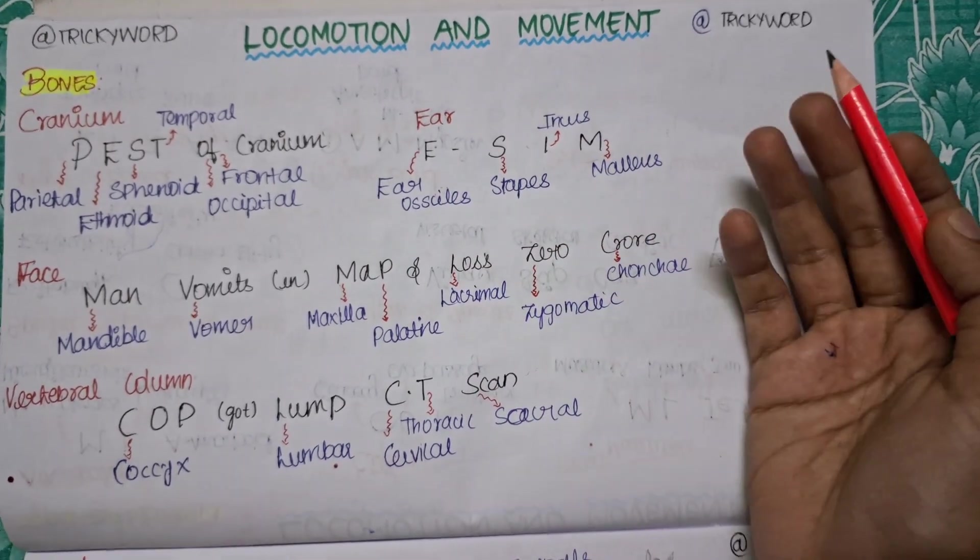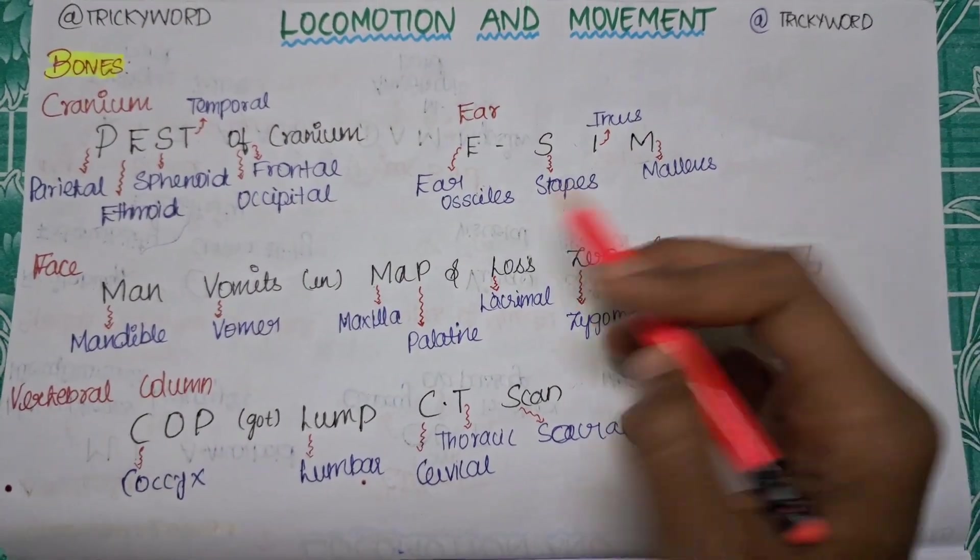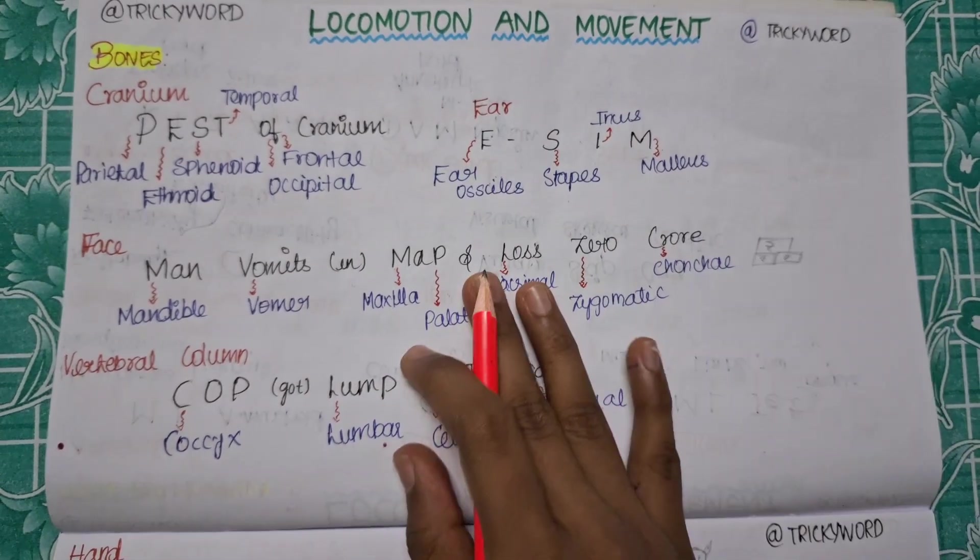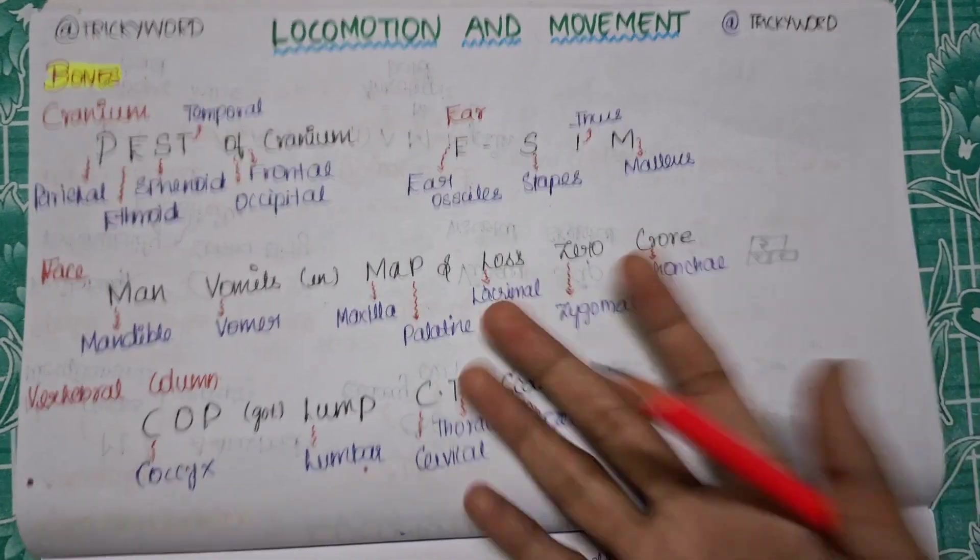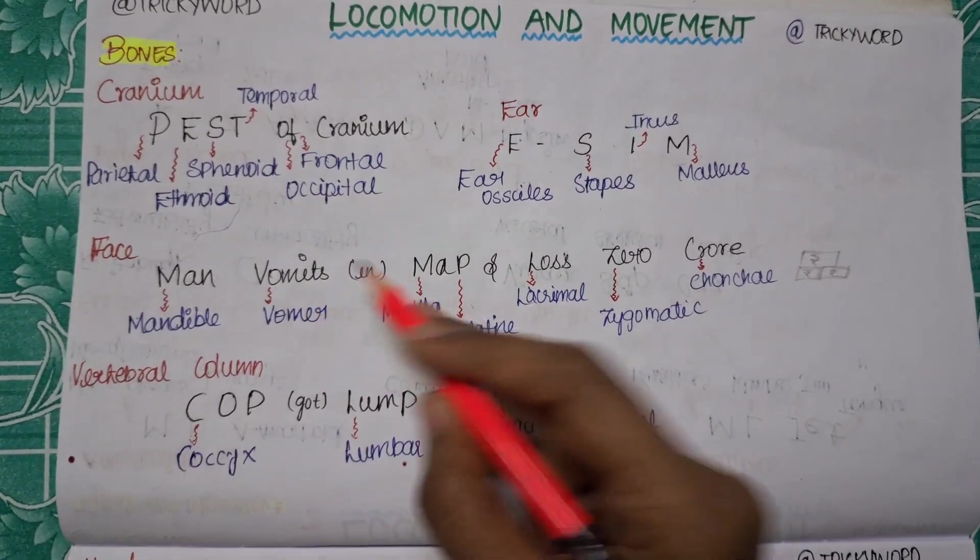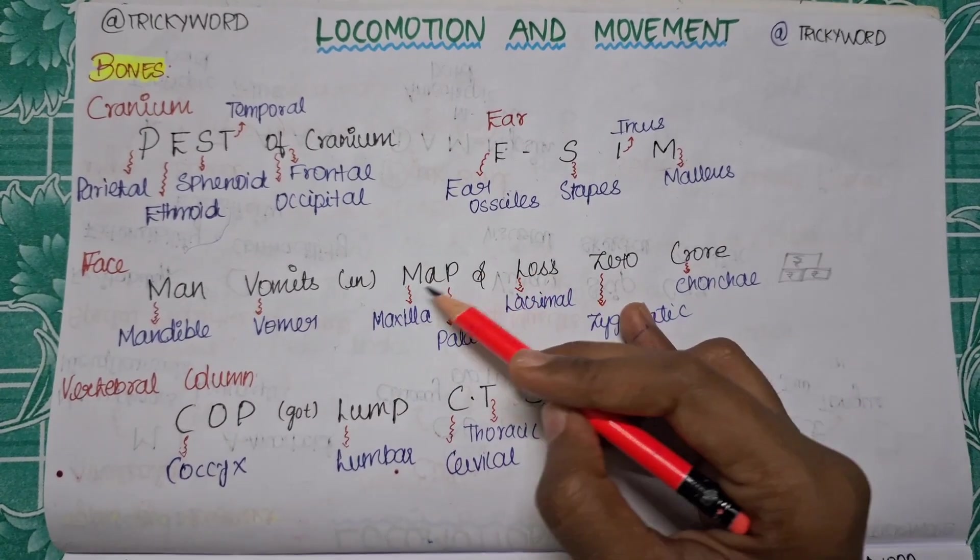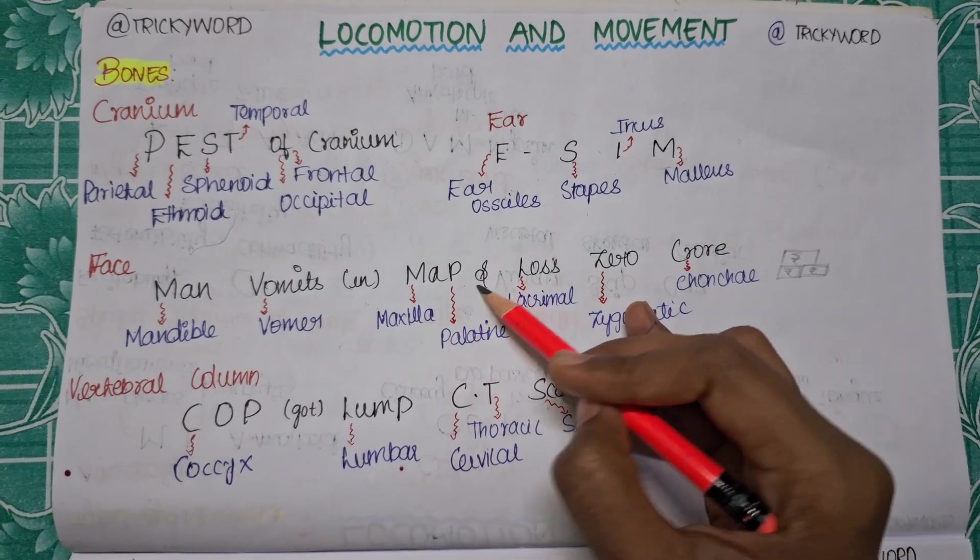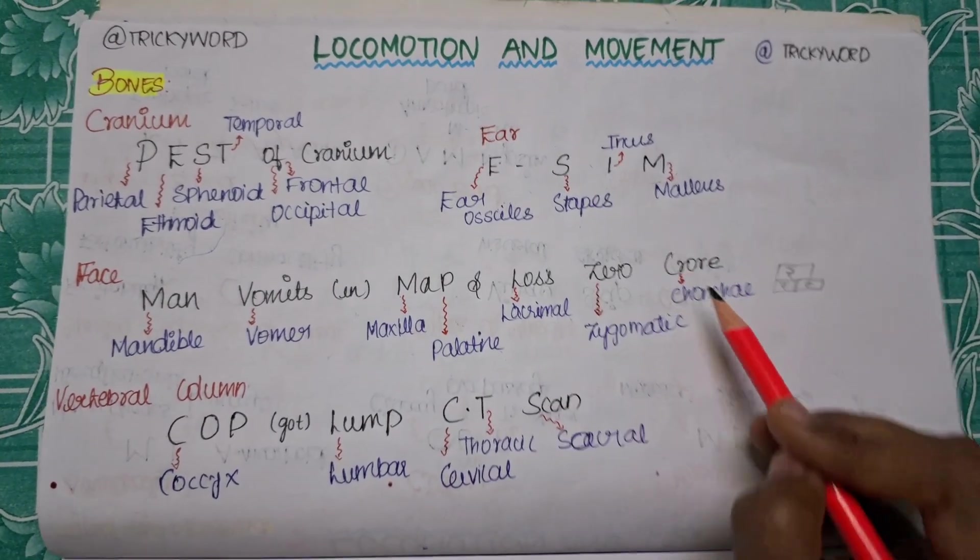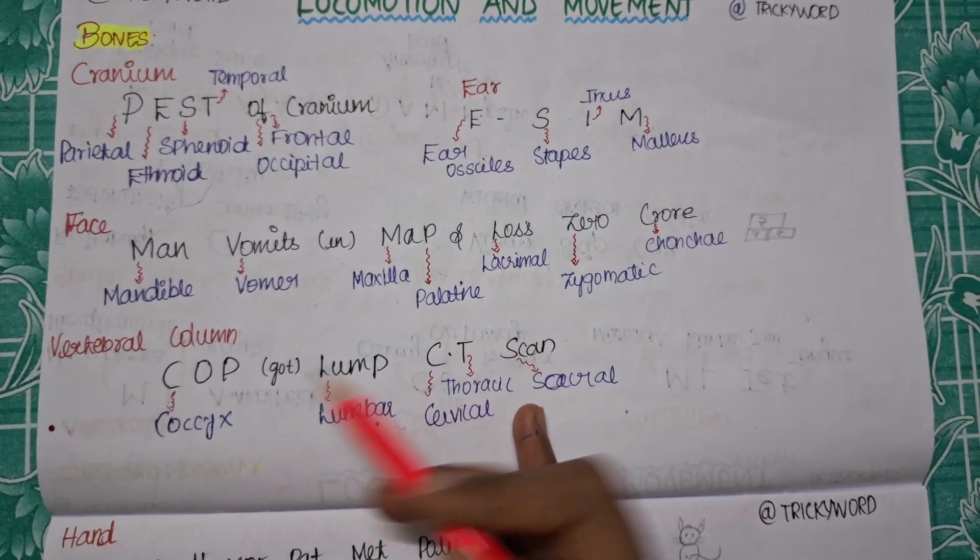The next one is for ear: E-SIM. Nowadays we are using the e-SIM card, right? So the trick is E-SIM. E is for your ear ossicle, S is for stapes, I for incus, and M for malleus. These are the tricks for ear. Now to talk about face: man vomits in map and lost zero crore. A man, give him a treasure map, think of that. What did he do? He vomits in that. So what will happen? He will be losing a crore. He is unable to attend the treasure now. So man is for mandible, vomit is for vomer, in is nothing, and in map M is for your maxilla, P is for your palatine bone, L-O-S-S loss is for your lacrimal, zero is for zygomatic, and crore for these bones on your face.